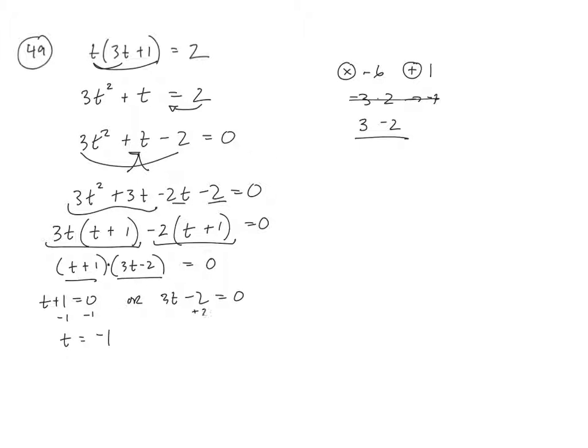On this side, I'll add 2 to both sides. So it'll be 3t = 2. Then I'll divide both sides by 3. I get t = 2/3. So there's my two answers for that one.